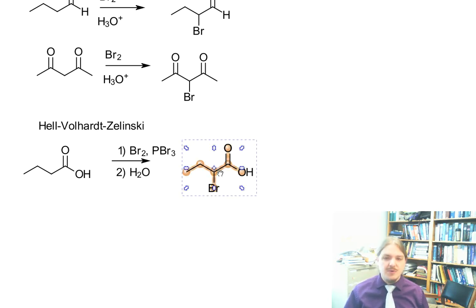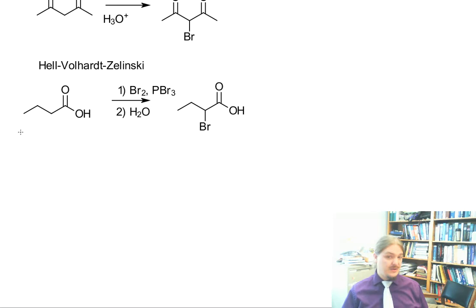It turns out that direct bromination of the carboxylic acids is a little bit tricky because there's multiple nucleophilic sites. And so what this process ends up doing, and I'm not going to draw in all of the steps necessarily.